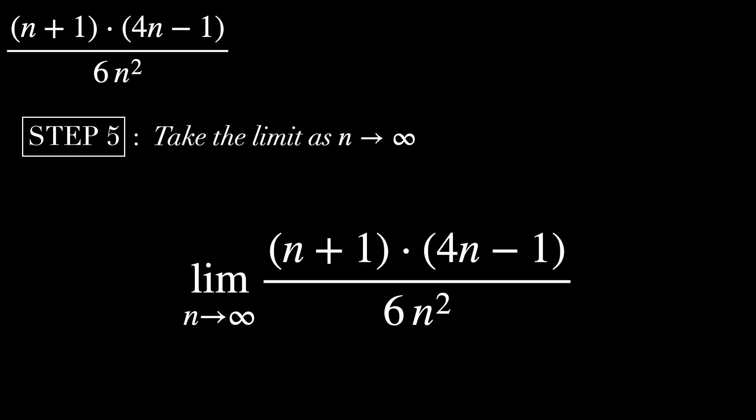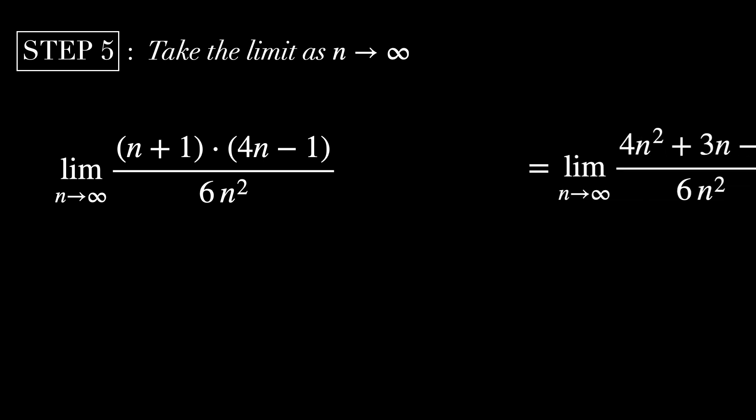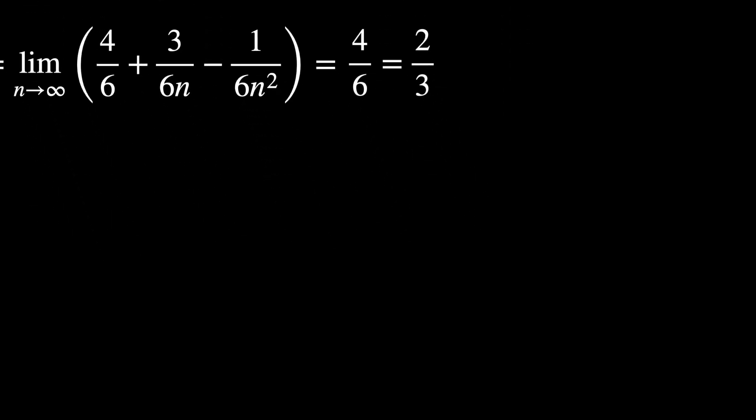Step 5 is to finally take the limit. The limit as n goes to infinity of (n+1)(4n-1)/(6n²) equals 4/6. So, two-thirds. Just as we've calculated before in the beginning of the video.